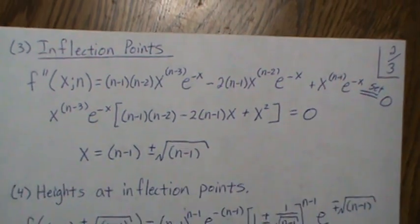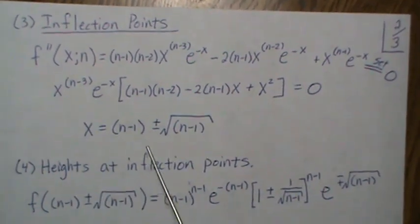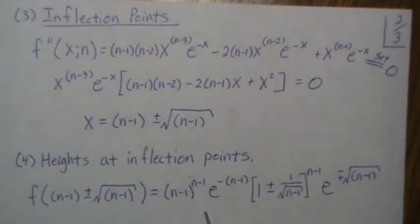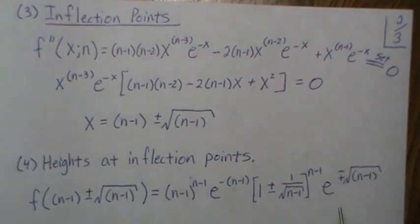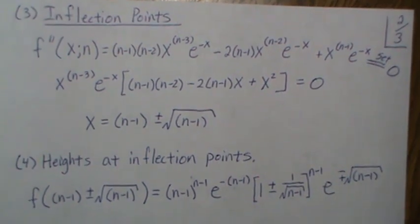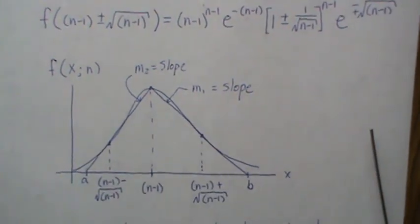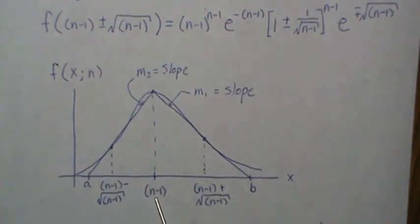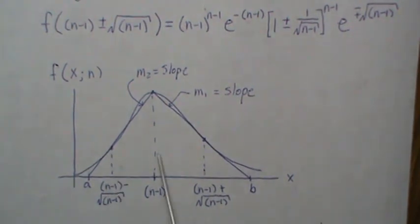Now let's find the height of our function at these inflection points, which is you just simply plug in these values to our function and we get this. And again, I'm going to go over it quickly. It's just plugging it in. And so graphically, what have we found? We found the mode. This is for any n. It's always n minus 1. The inflection points are at n minus 1 plus the square root of n minus 1. And then you subtract the square root of n minus 1 to find this inflection point.